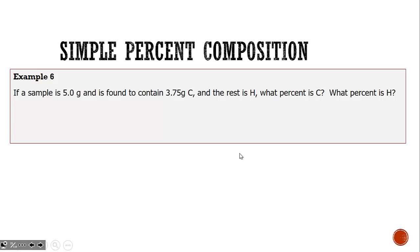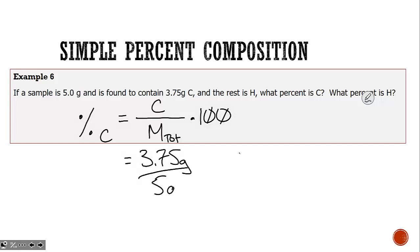For example, if I have five grams of some carbon-based compound and three grams of it is carbon, what is the percent carbon? Percent composition means we take the mass of carbon and divide by the total mass of the compound times 100. Three grams of carbon divided by five grams total times 100 gives us 75% carbon.